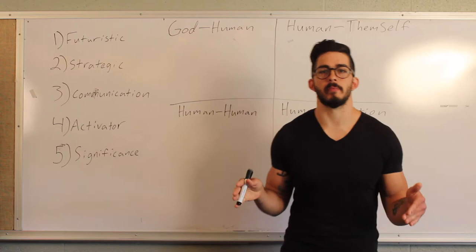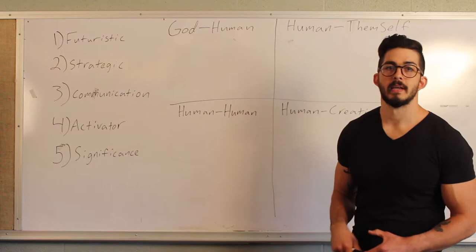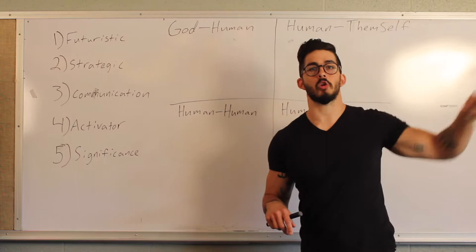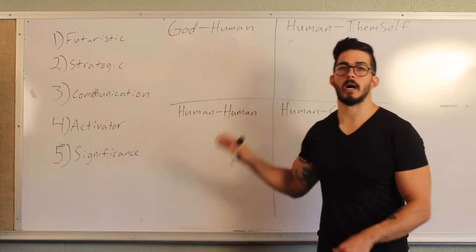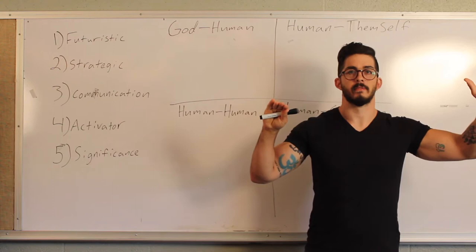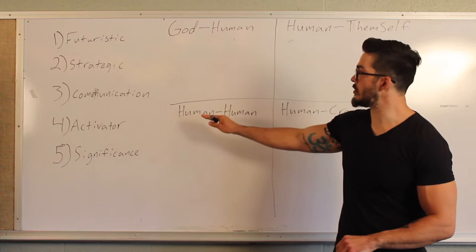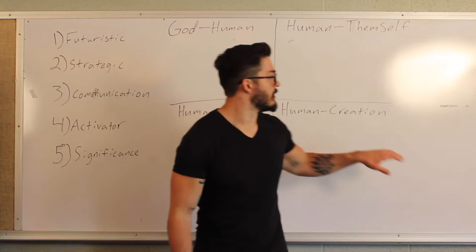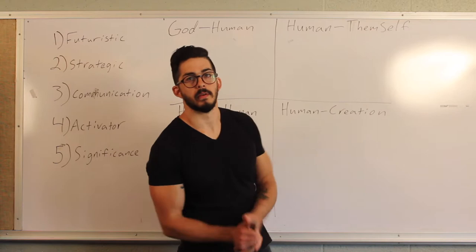Now, in the middle of your piece of paper, I want you to draw a big plus sign, similar to this. And in that top left quadrant, I want you to write 'God, human' — two words. In that top right quadrant, I want you to write 'human, themself.' In the bottom left quadrant, I want you to write 'human, human.' And then finally, in the bottom right quadrant, I want you to write 'human creation.'